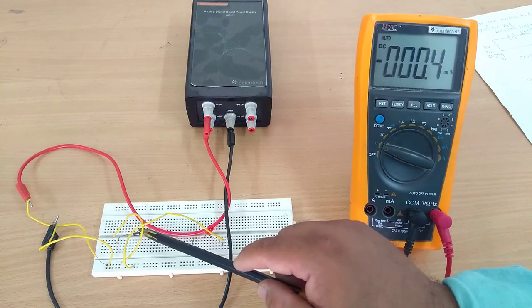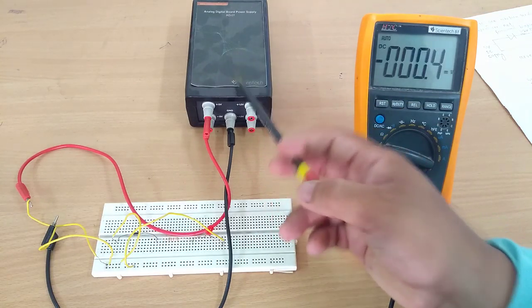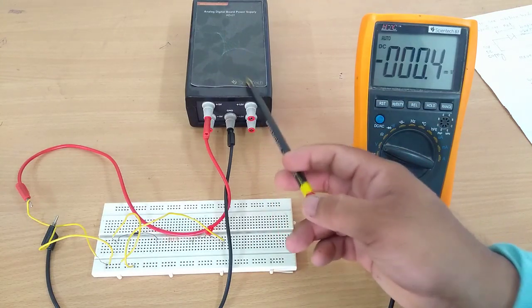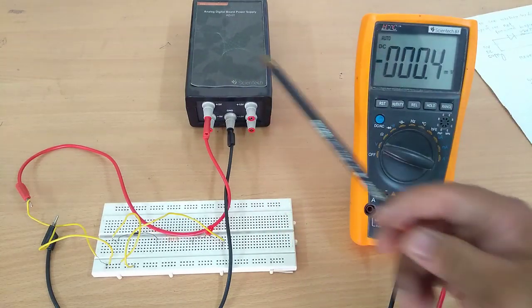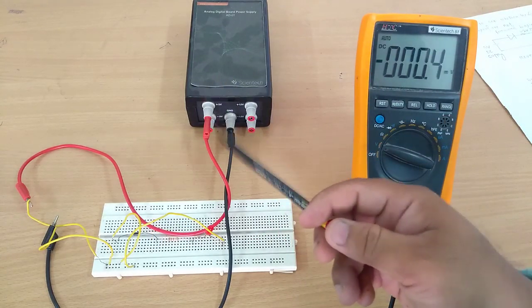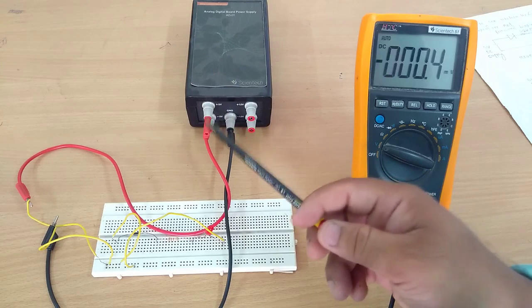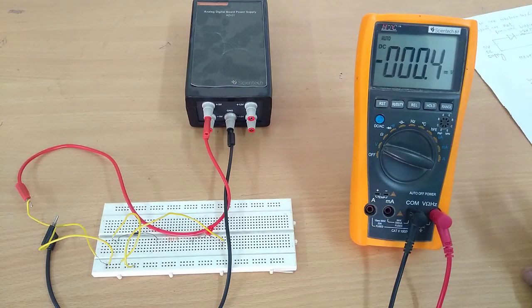A PN junction diode is being taken. Here a DC source that is capable of giving plus or minus 5 volt, plus or minus 12 volt. Here I have taken plus 5 volt supply.